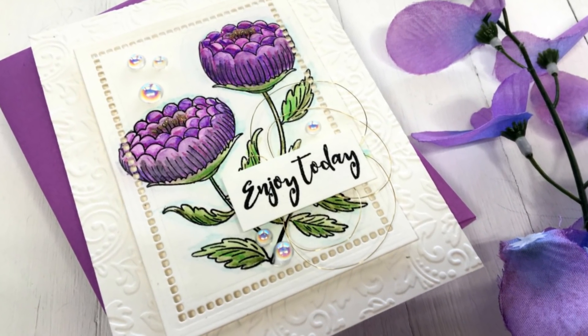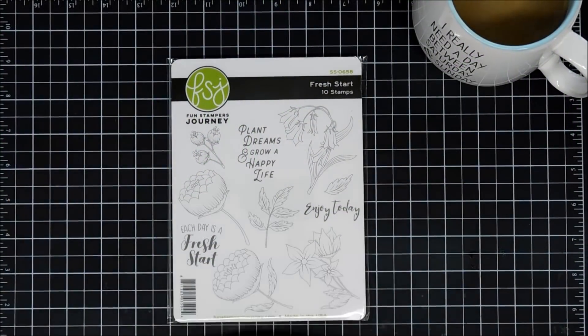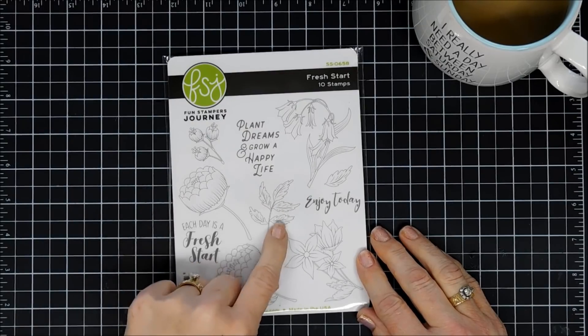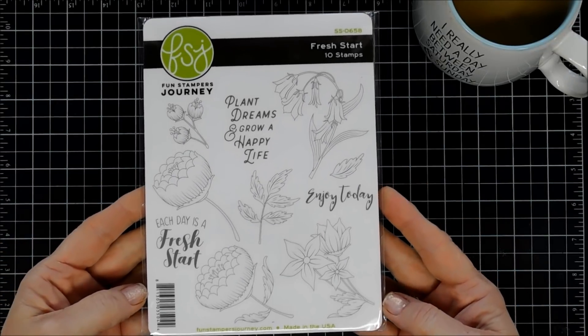Hello everyone, Tina here. I hope you're having a fantastic day. Today I'm super excited to share with you the Stamp of the Month Club Kit from Spellbinders. This is the April kit for 2019 and it's called Fresh Start.